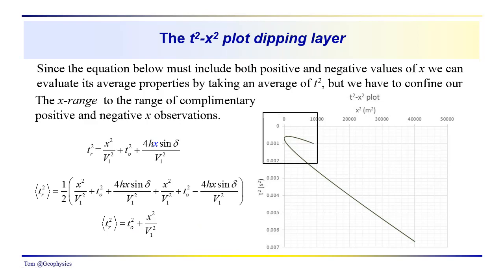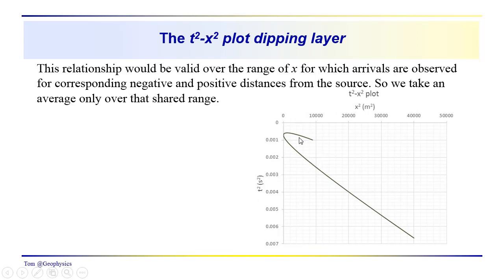Since we're going to confine ourselves to a range of complementary positive and negative X observations, we're just going to be looking at the data in this window here. And we're going to take an average over that shared range.